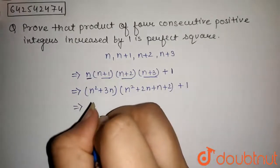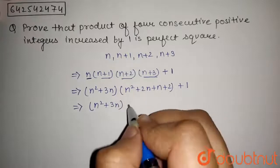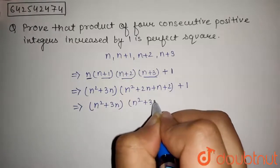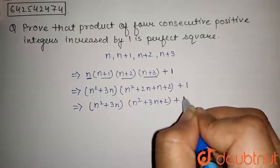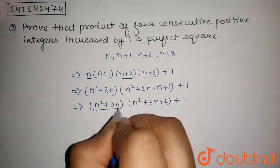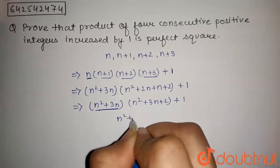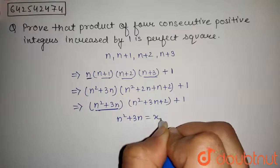On simplifying this, we get n square plus 3n, n square plus 3n plus 2, plus 1. Now, we will put this n square plus 3n is equal to x.